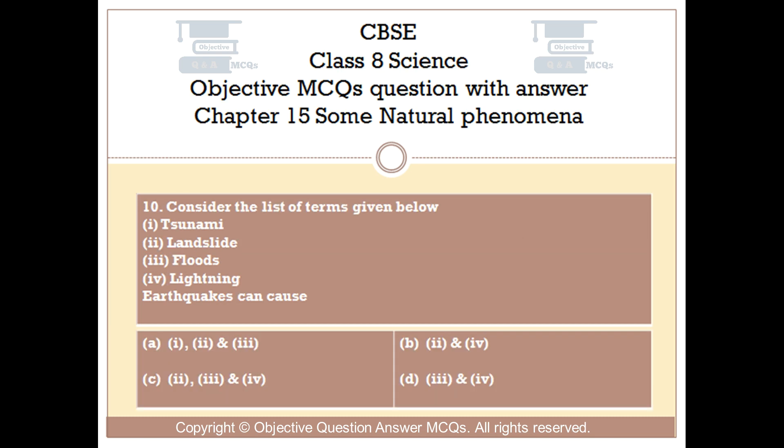Question number 10. Consider the list of terms given below: 1. Tsunami, 2. Landslide, 3. Floods, 4. Lightning. Earthquakes can cause: Option A, 1, 2, and 3. Option B, 2 and 4. Option C, 2, 3, and 4. Option D, 3 and 4.